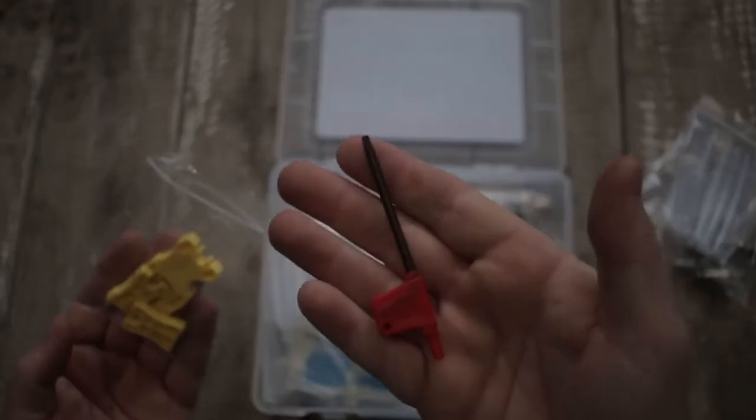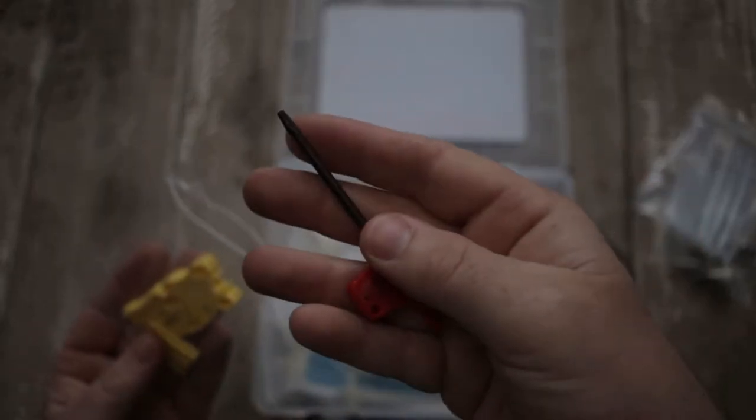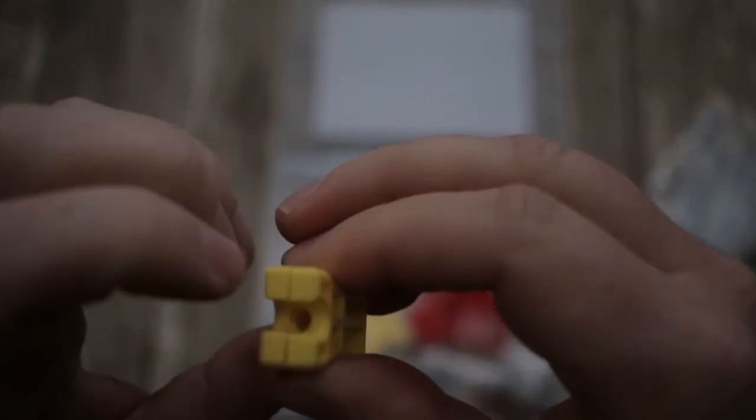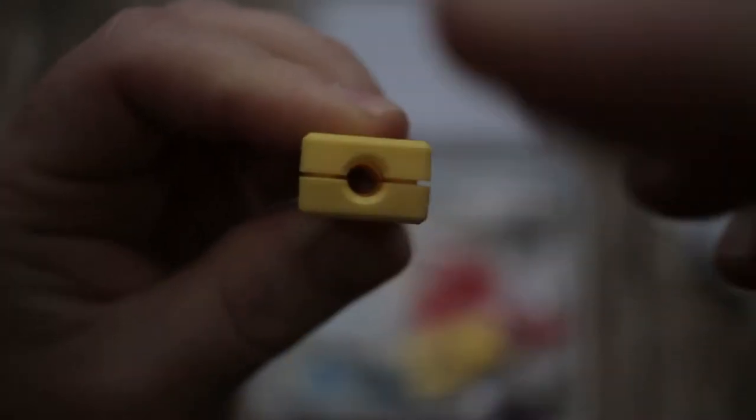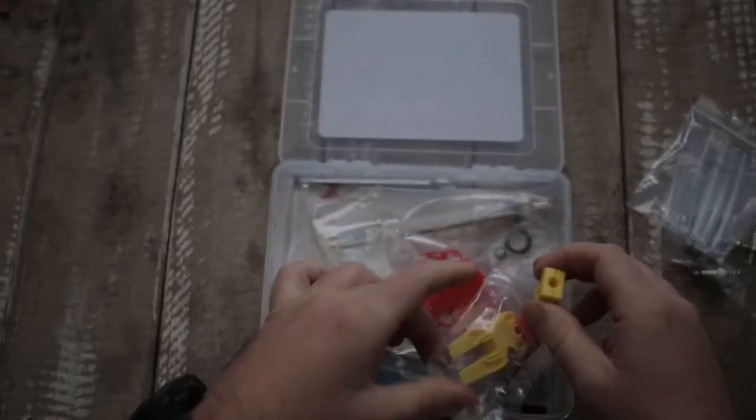Look at this. They also include this T10 Torx here for your brake bolts. Bleed block. These are connector press blocks. This goes in the vise, hose goes in there and it holds the hose in place while you put the connectors on. Very nice.